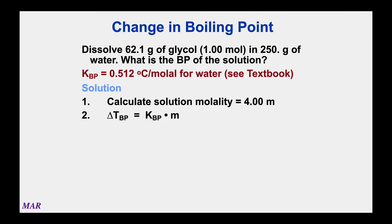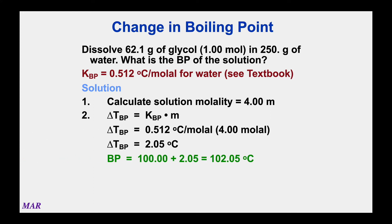We multiply the molality by K — 4.00 by 0.512 — to calculate delta T. Delta T comes out to be 2.05 degrees Celsius. That's the amount that the boiling point has increased. So water normally boils at 100; we add 2.05 to it. The boiling point of the ethylene glycol solution is 102.05 degrees Celsius. This is the effect of having a solution — boiling points are higher.